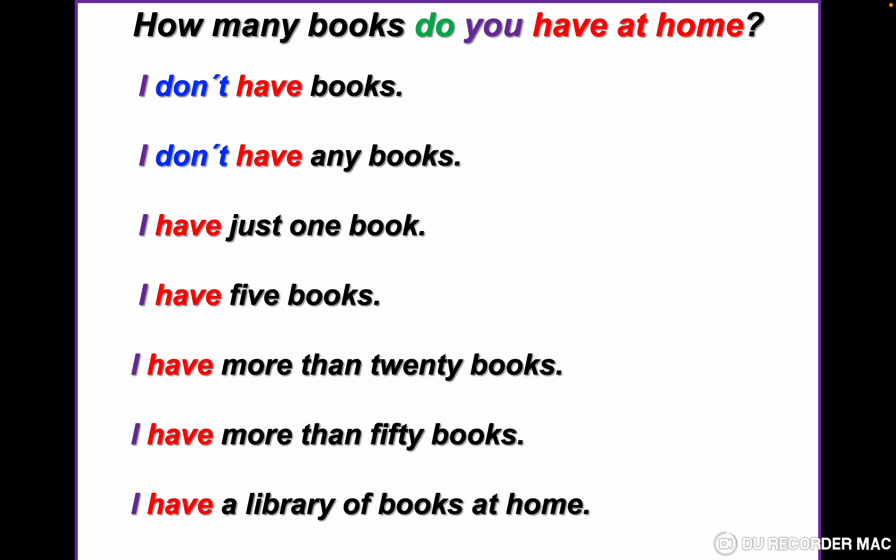I don't have any books at home. I have just one book at home. I have five books at home. I have more than 20 books at home. I have more than 50 books at home. The last example: I have a library of books at home.